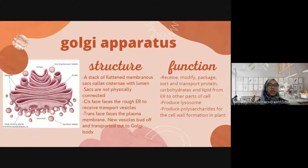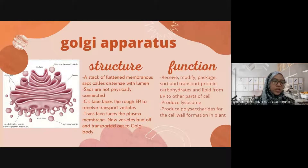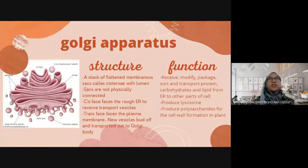Lysosomes are produced in the Golgi apparatus. The teacher asks students to identify which structure is the lysosome in their textbook diagram. The lysosome is basically a secretory vesicle — a vesicle produced from the Golgi apparatus. A secretory vesicle is one that contains something which will be released out from the cell.